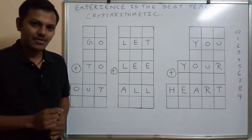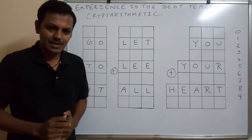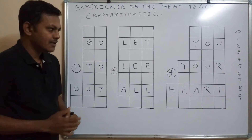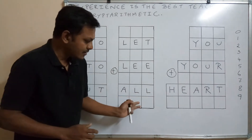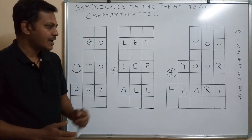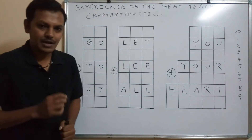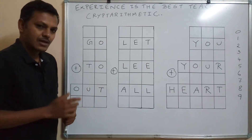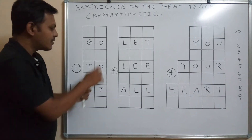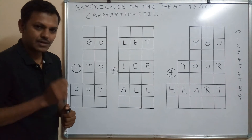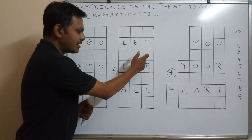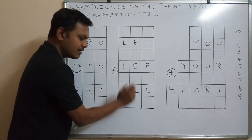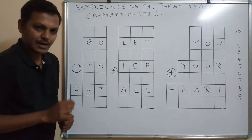Hello everyone, welcome. In this video we are going to see the cryptarithmetic addition problem in artificial intelligence. Cryptarithmetic means using zero to nine — ten different digits — replacing English alphabets. Using rules, we are going to find out a three-digit number, another three-digit number, and a five-digit number. The maximum carry over is one, because when adding any two numbers we get at maximum 19.